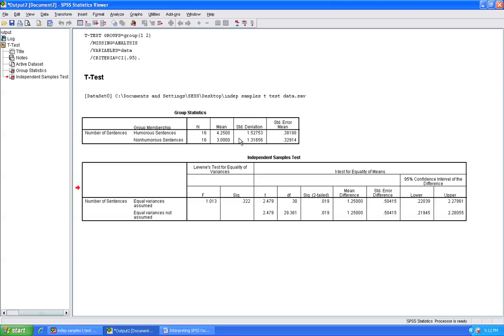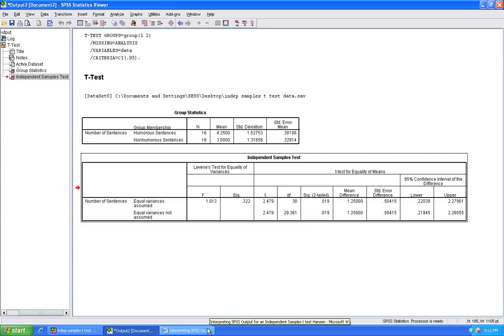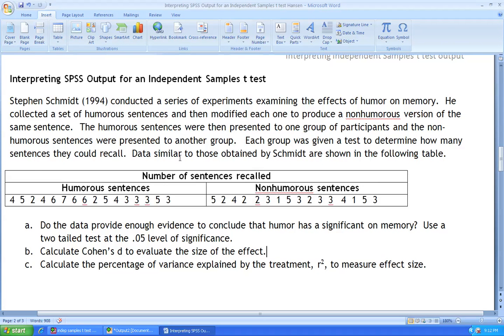When this test is run in SPSS there are two tables that are provided. The first table is of descriptive statistics for the two groups. The second table provides output from three different statistical tests. Those tests are illustrated in the accompanying Word file.